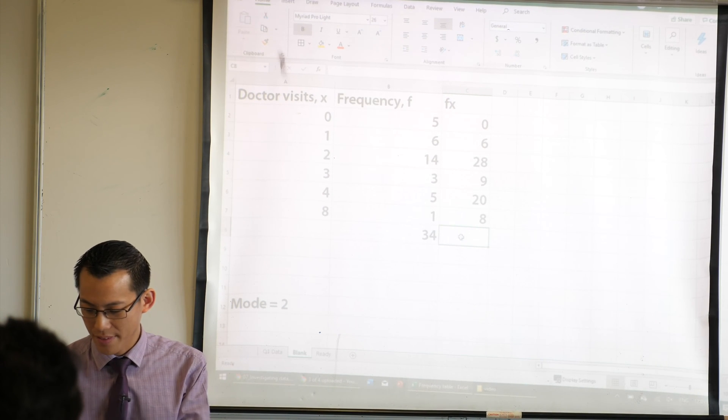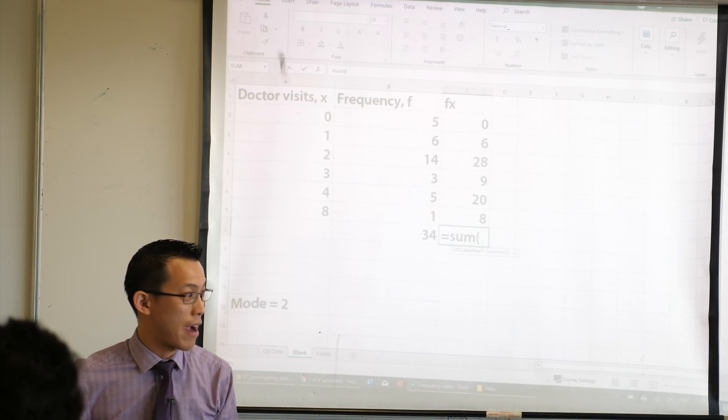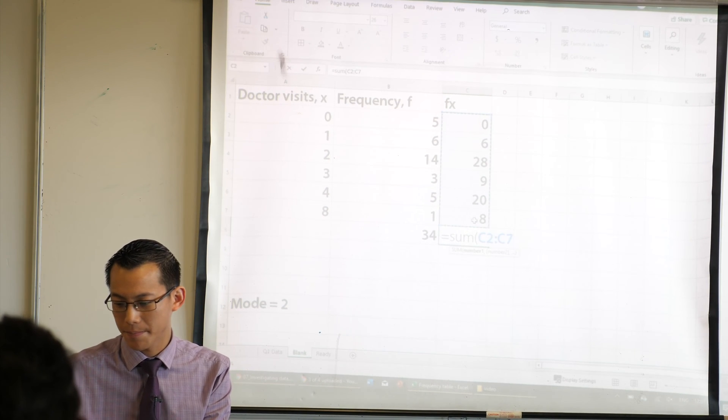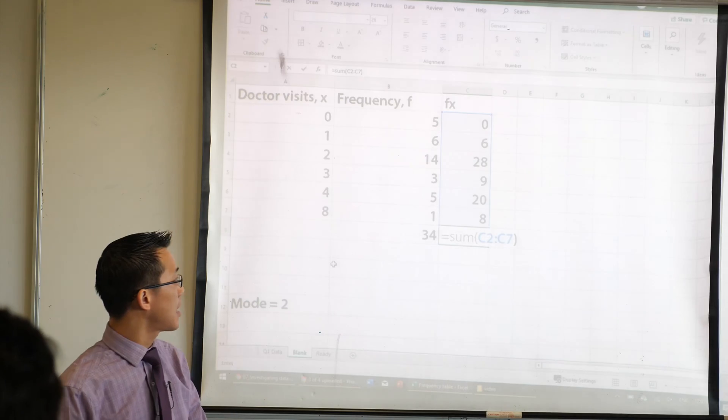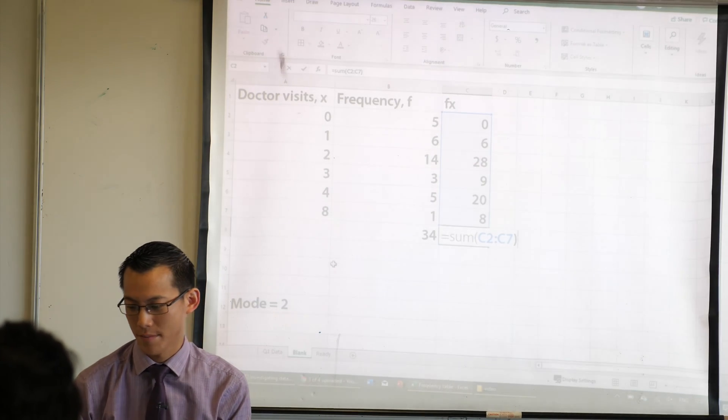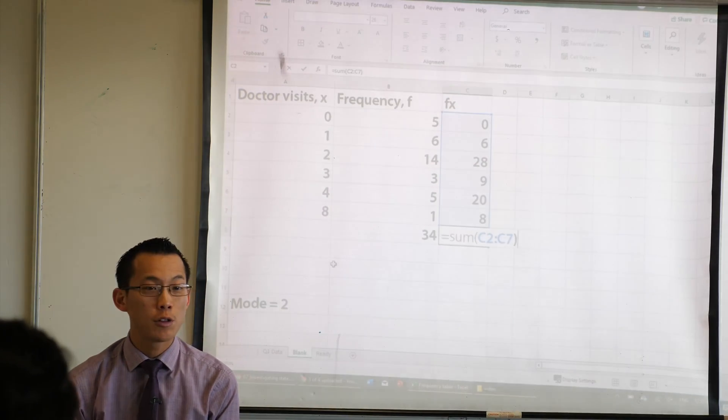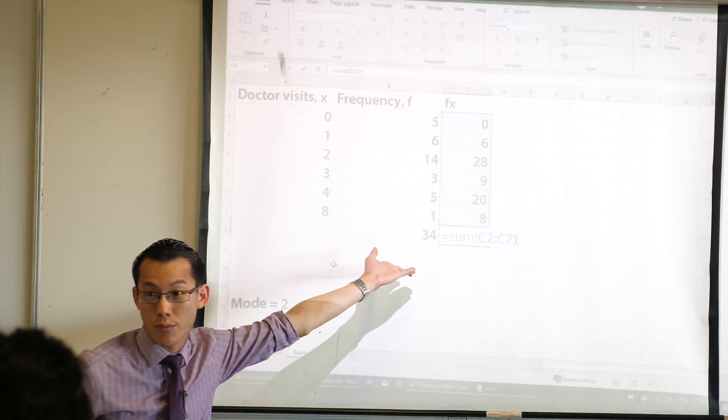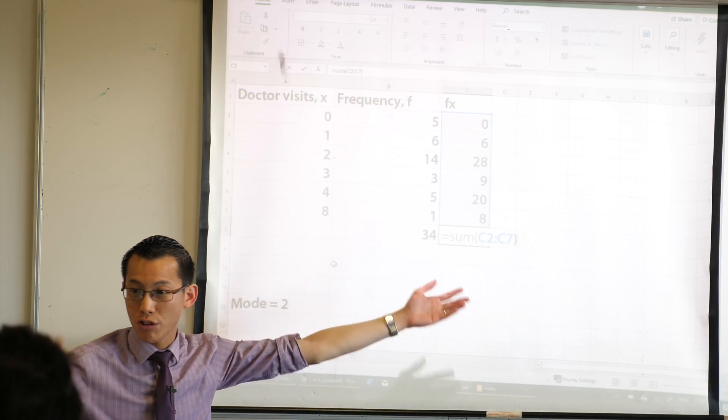Equals sum. Open your bracket and then you can highlight all the cells that you want. So I'll leave that there for a second so you can see what it looks like. If you'd like, you don't even need to highlight with your mouse. You can actually just go ahead and directly type c2 comma c7.